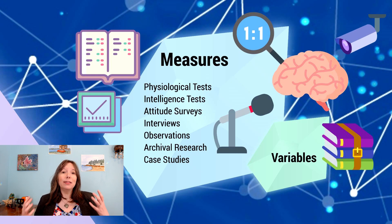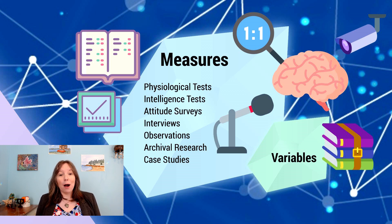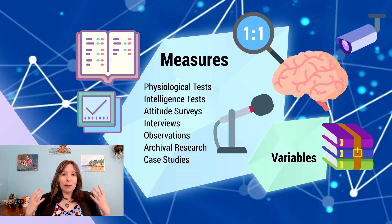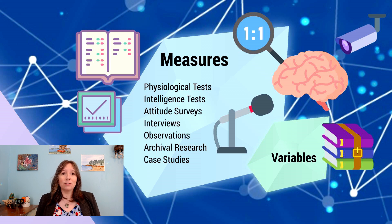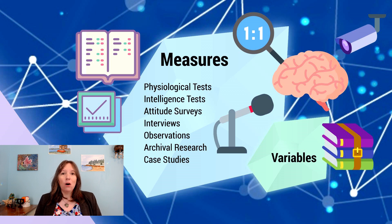After we choose our participants, it's important to look at the measures. There are many different ways to measure psychological phenomena. Some of the most popular include physiological tests — measuring things on the body such as brain imagery, saliva, skin conductivity, blood pressure, or eye dilation. We also do cognitive tests like intelligence tests, word vocabulary tests, or reaction time tests. We could also do attitude surveys with no right or wrong answers, asking about personality, preferences, or lifestyle.